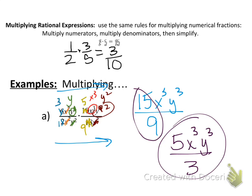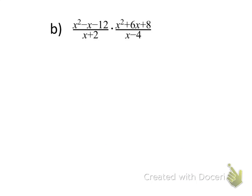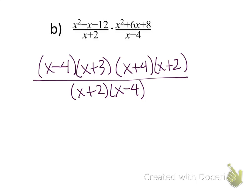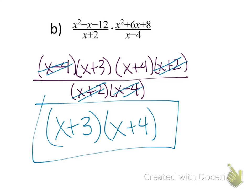That example had no addition or subtraction — just monomials being multiplied. Now let's look at polynomial fractions being multiplied. First, factor the numerators and denominators. The first numerator, x² - x - 12, factors as (x - 4)(x + 3). The other numerator factors as (x + 4)(x + 2). The denominators can't be factored further, so we write everything as one large fraction. Now we can see common factors: (x + 2) on numerator and denominator cancel; (x - 4) on numerator and denominator cancel. We're left with (x + 3)(x + 4).